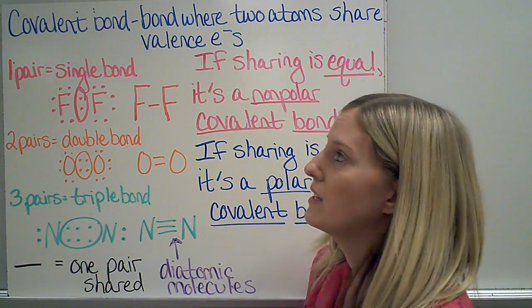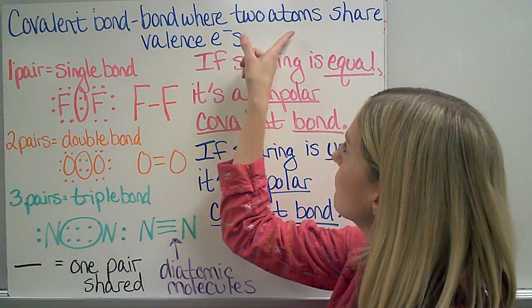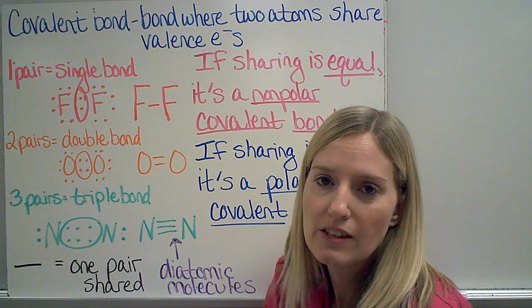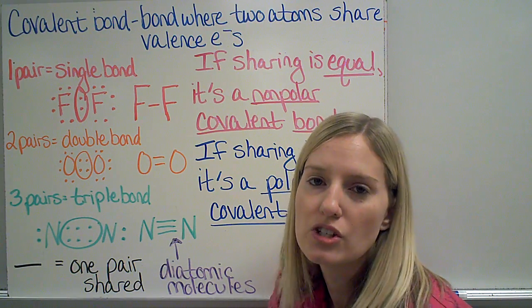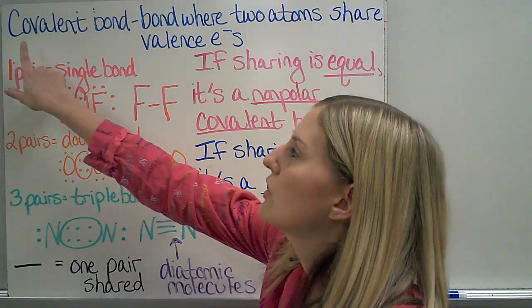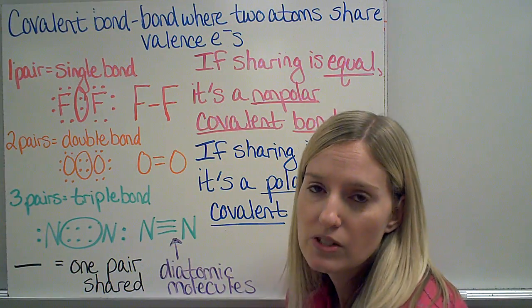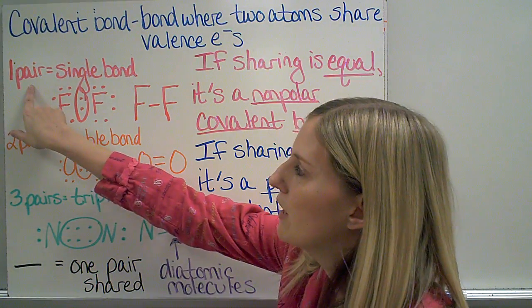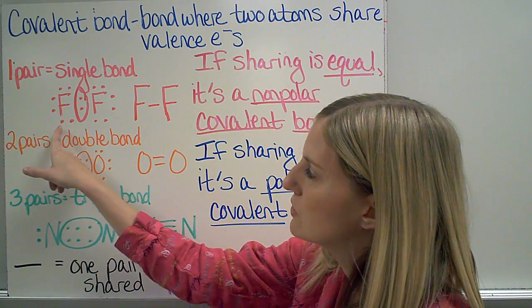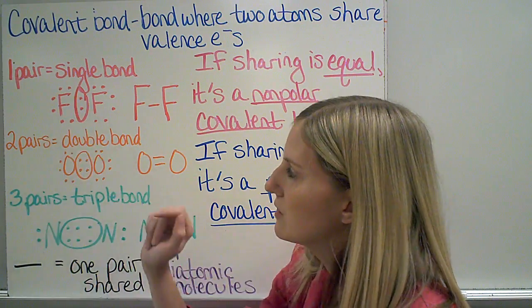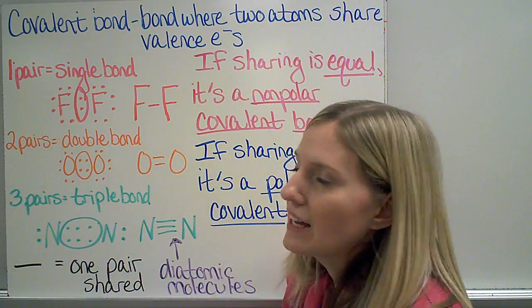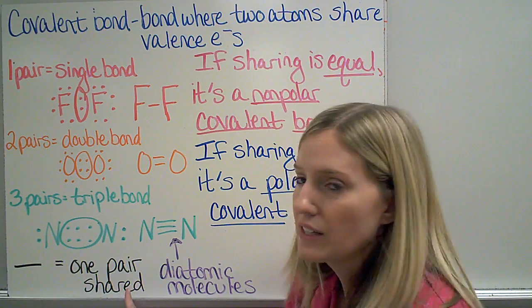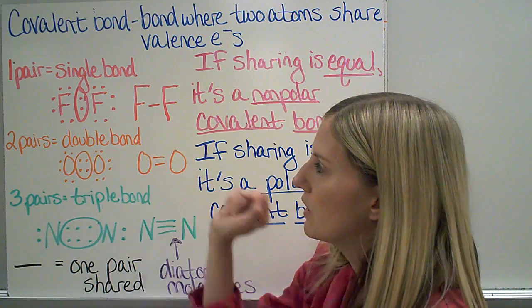In a covalent bond, we're going to have two atoms sharing their valence electrons. Covalent — think about co-presidents: they're sharing the position. If they are sharing one pair of electrons, that's called a single bond. Here I have two electron dot diagrams for fluorine with two dots in the middle being shared — it's a single bond. Another way I can draw that is with a dash; each dash is one pair being shared. So I can draw it this way, or like this for fluorine.